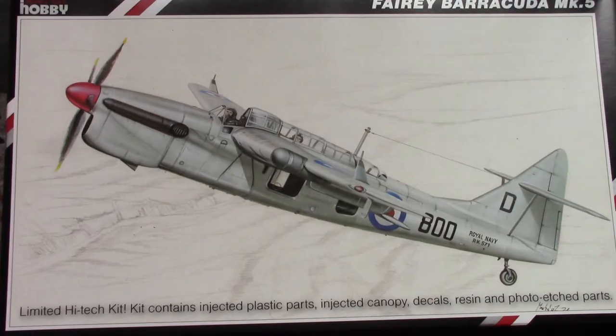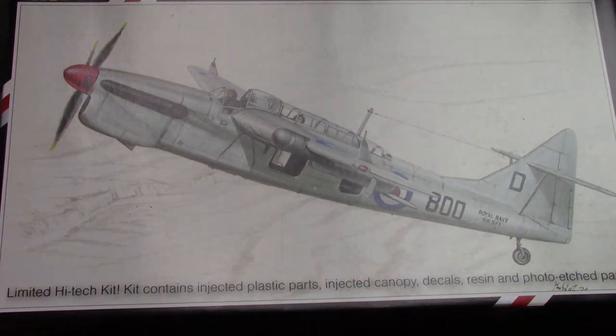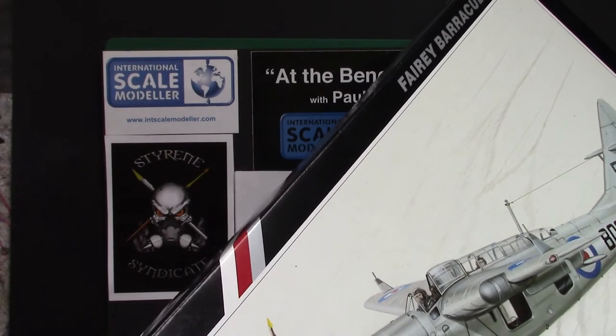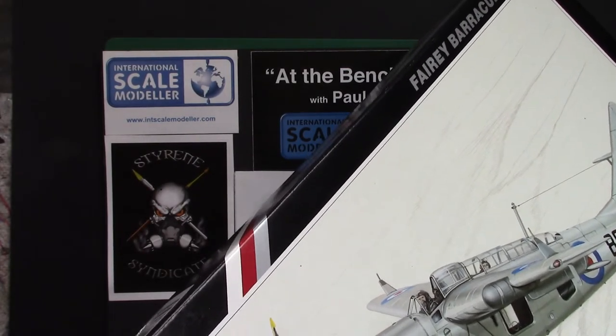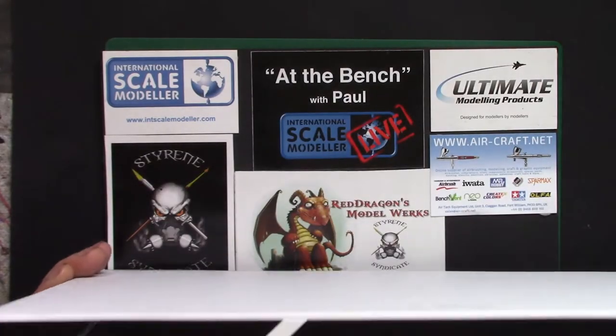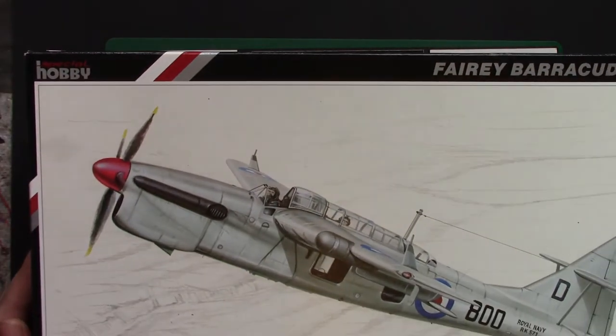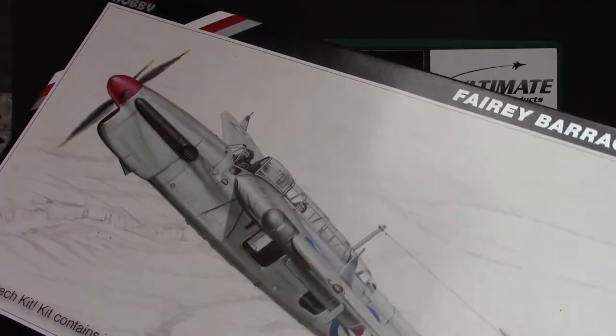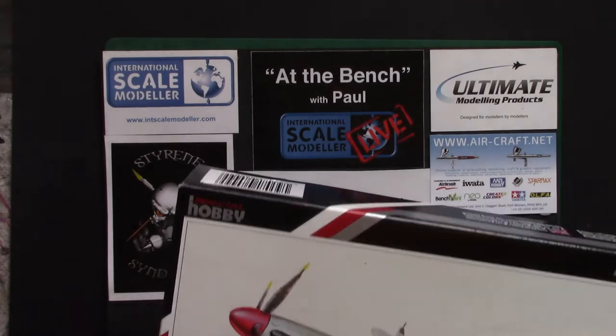This is the high-tech kit. It's got plastic parts, decals like you normally get, also a lot of resin, bit of etch in there as well. 1:48 scale, kit number is 48069, relatively nice box art.